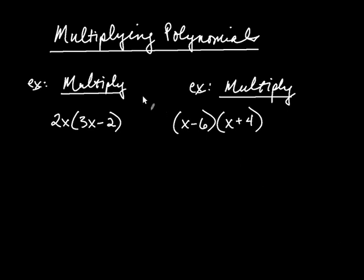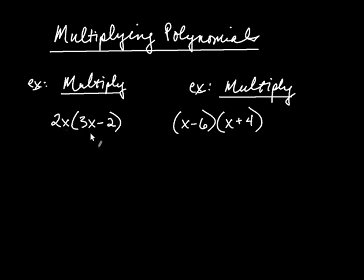In this video we're going to talk about multiplying polynomials. So let's first multiply the polynomial 2x by the polynomial 3x minus 2. As far as terminology is concerned, 2x is called a monomial because there's only one term, but 3x minus 2 would be a binomial because there are two terms. The first term here is 3x, and the second term is negative 2.